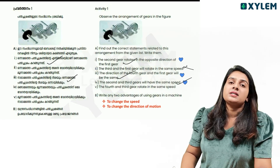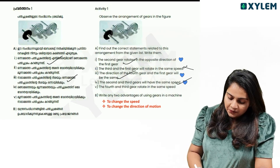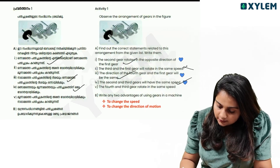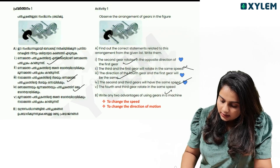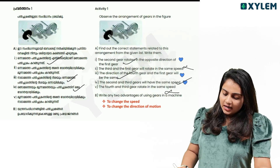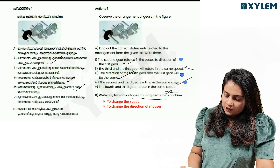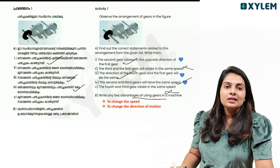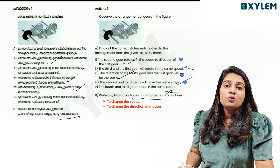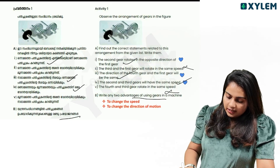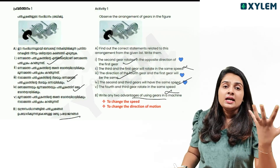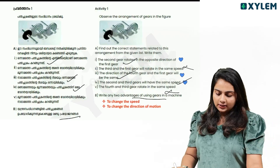Second and third gear will have the same speed. The fourth and third gear have the same speed. So here we get the same speed as we arrange. So write any two advantages of using gear — the direction of motion and the speed.